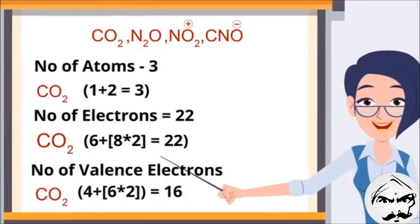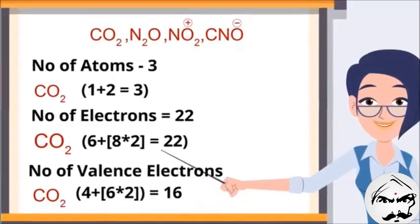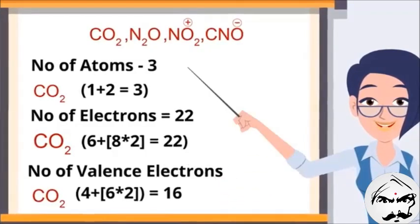So 2 times 8 is 16. 16 plus 6 gives us 22. So the total electrons in CO2 is 22.